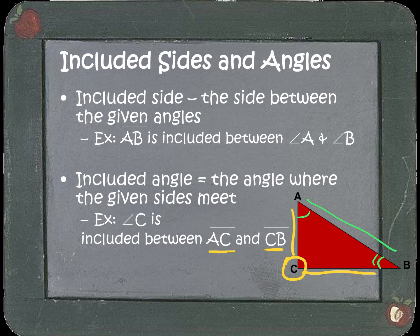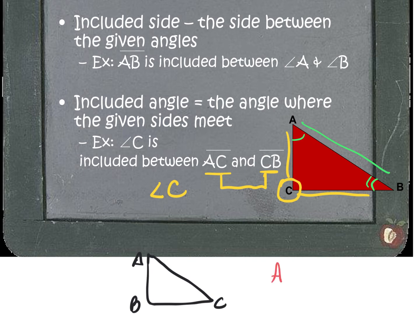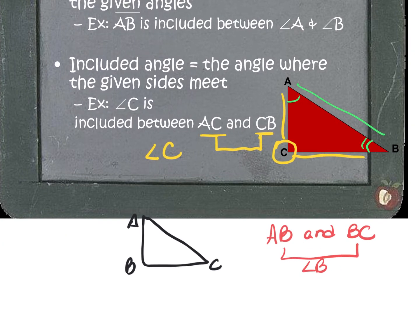When we refer to the included angle, this is the angle where the given sides meet. For example, if I give you sides AC and CB and ask you to find the included angle, it's the angle where those two sides meet — which would be angle C. Notice the letter that both sides have in common is C, so that would be the included angle. For another example, if I ask for the included angle between AB and BC, the letter in common is B, so the included angle is angle B.